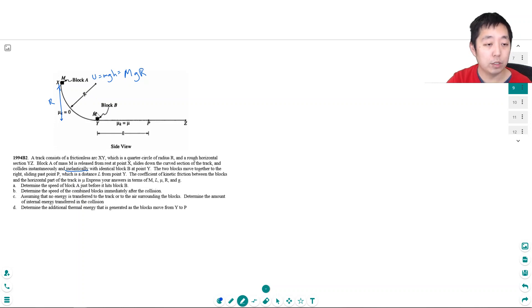All that energy goes into kinetic energy at the bottom so that has to equal its kinetic energy which would be one half m v squared. The m's cancel and so v is equal to square root of two gr. So that's part a.